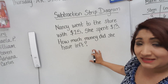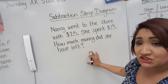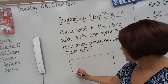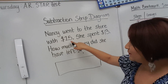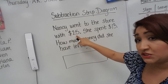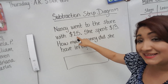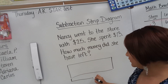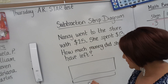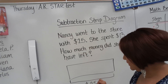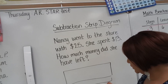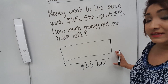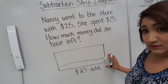We're going to do the same thing like we did with the addition strip diagram — we're going to draw a rectangle. Now, we know our total. Our total is $25, and just like the subtraction strip diagram, we're going to put that here on the bottom. This right here tells me my total. The total goes on the bottom, and the kids already know that the total always goes on the bottom.